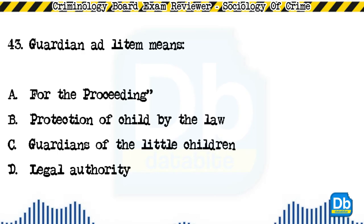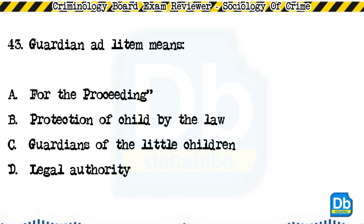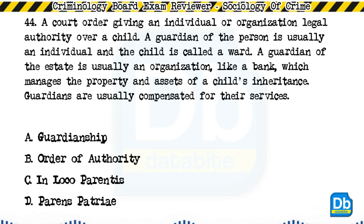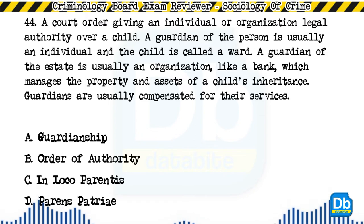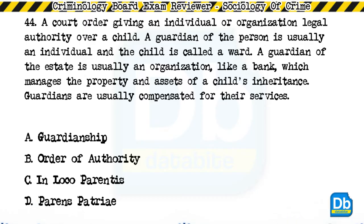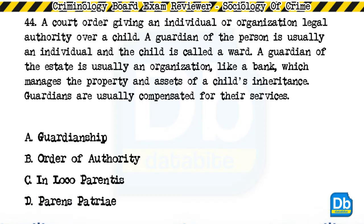Question 43: Guardian ad litem means: a) for the proceeding, b) protection of child by the law, c) guardians of the little children, d) legal authority. The answer is A, for the proceeding. Question 44: A court order giving an individual or organization legal authority over a child — a guardian of the person is usually an individual and the child is called a ward; a guardian of the estate is usually an organization like a bank which manages the property and assets of a child's inheritance: a) guardianship, b) order of authority, c) in loco parentis, d) parens patriae. The answer is C, in loco parentis.